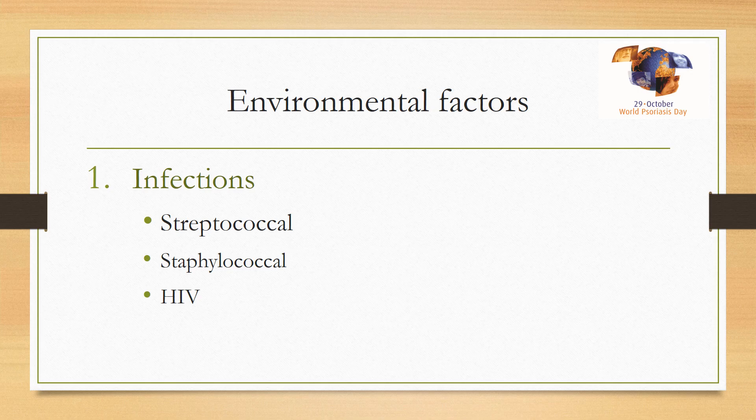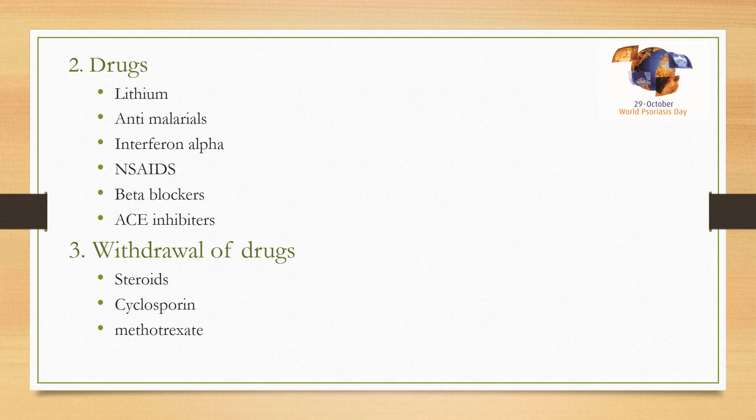The second key factor is environmental triggers. First, infections — streptococcal infection of the throat and skin can both cause the onset and exacerbation of the disease. Patients with exacerbations associated with streptococcal throat infection tend to benefit from tonsillectomy. Streptococcal carriage is present on psoriatic skin more than in the control population. HIV can also trigger onset and exacerbation of psoriasis.